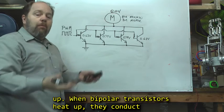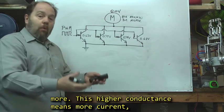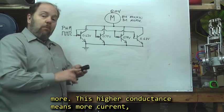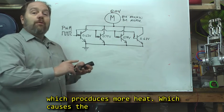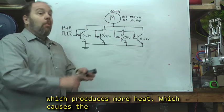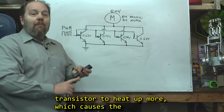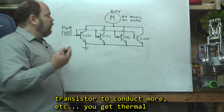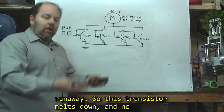When bipolar transistors heat up, they conduct more. This higher conductance means more current, which produces more heat, which causes the transistor to heat up more, which causes the transistor to conduct more, etc. You get thermal runaway.